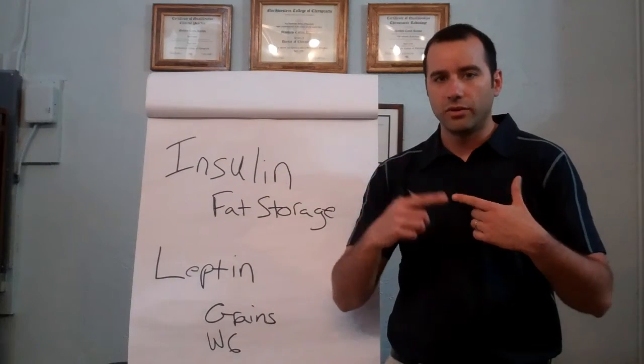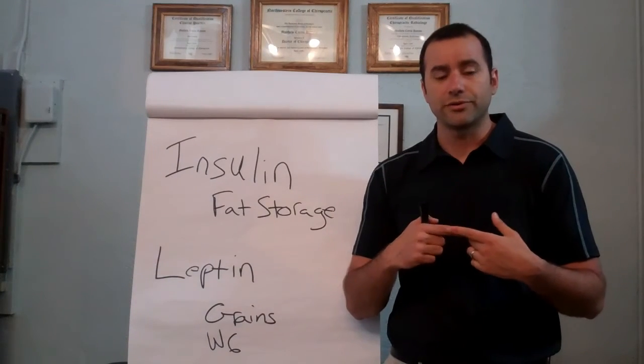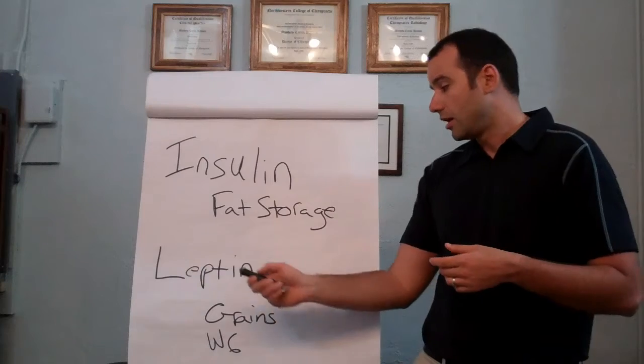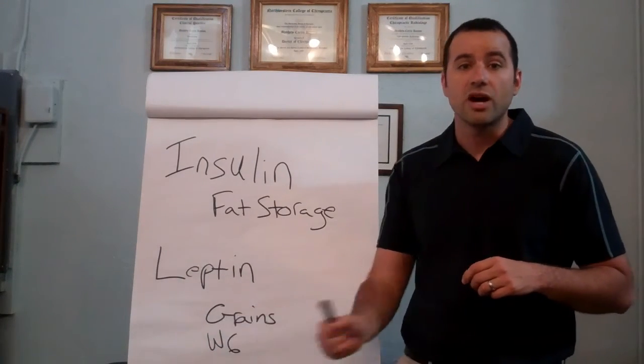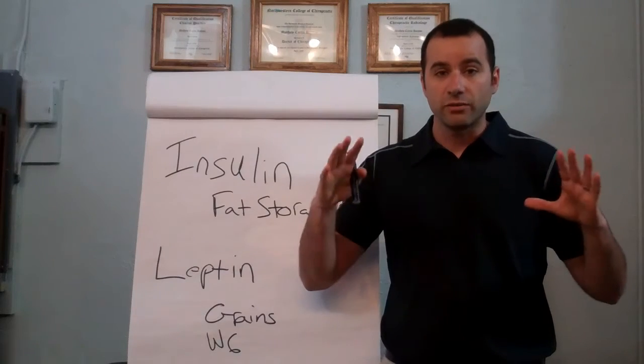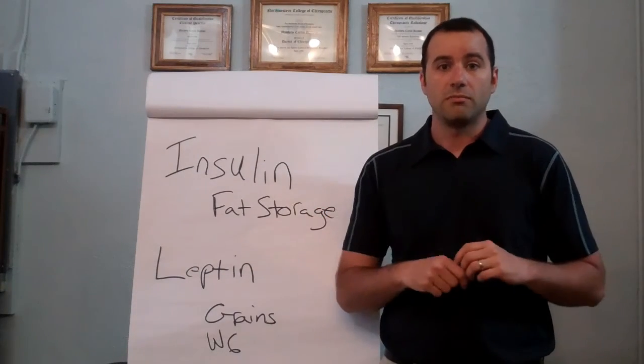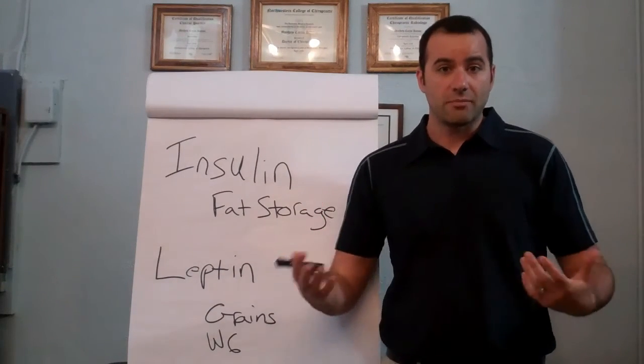So cutting back on those things, grains and industrial seed oils are going to help to make you non-leptin resistant. So this hormone can do its job and keep you at a very relatively stable body weight and a very good body composition.